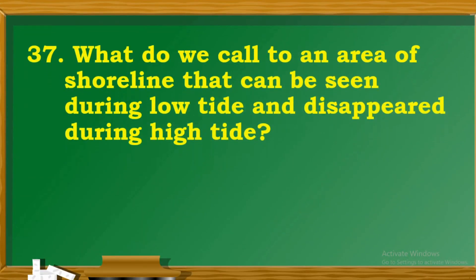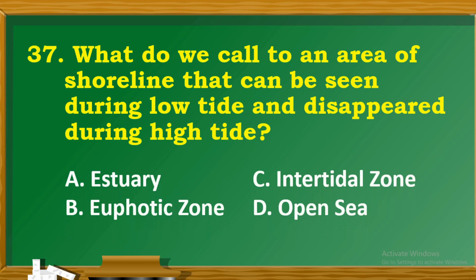Question 37: What do we call an area of a shoreline that can be seen during low tide and disappears during high tide? A. Estuaries. B. Euphotic zone. C. Intertidal zone. D. Open sea.